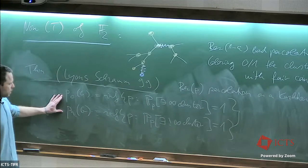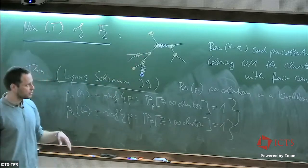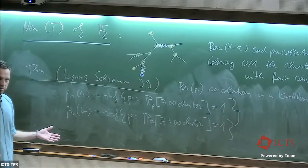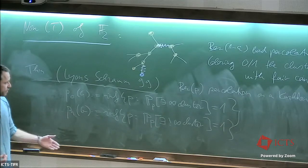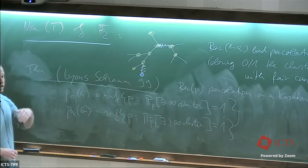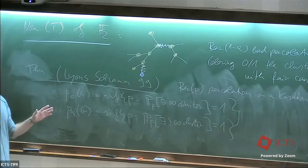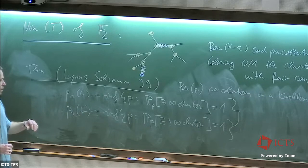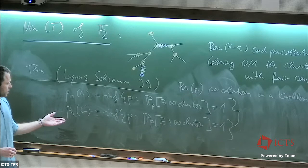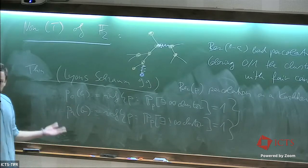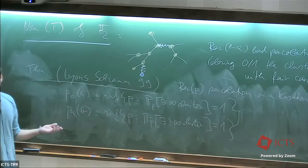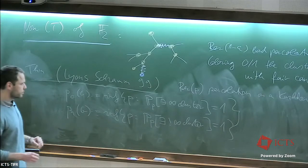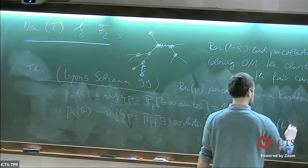On a tree, p_u is one — you never get a unique infinite cluster. There's a conjecture that for one-ended non-amenable groups, p_u is less than one. On an amenable Cayley graph, if you have an infinite cluster it's always unique. On a non-amenable group you may get infinitely many infinite clusters — it's either one or infinitely many. The conjecture is known for finitely presented non-amenable groups, and for Kazhdan groups p_u is less than one.